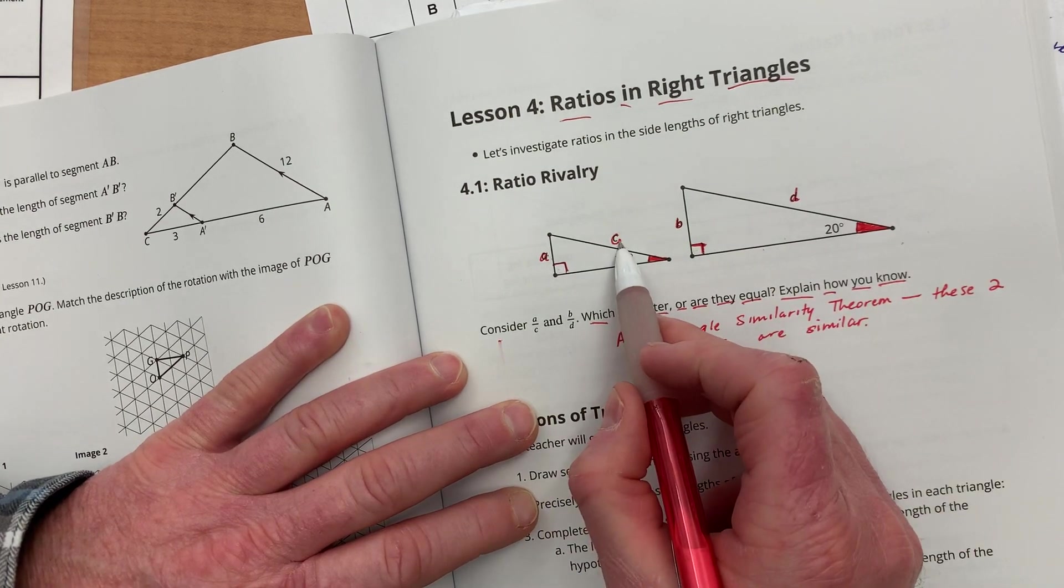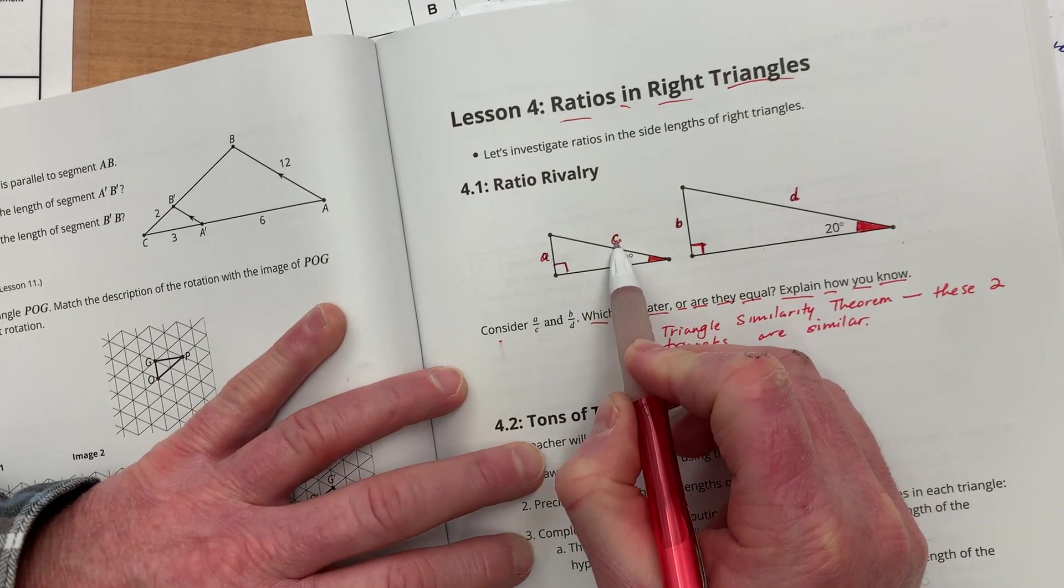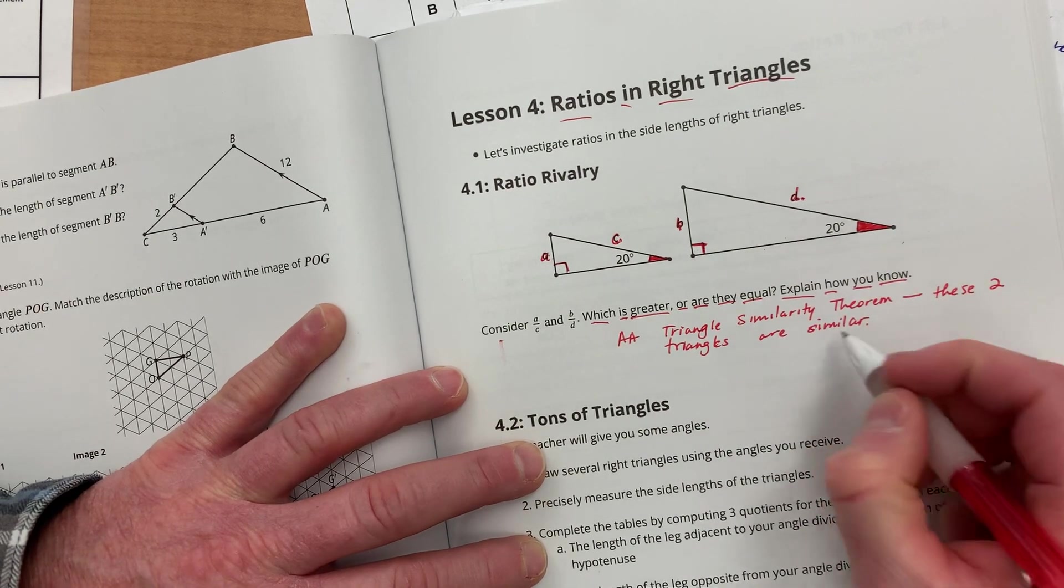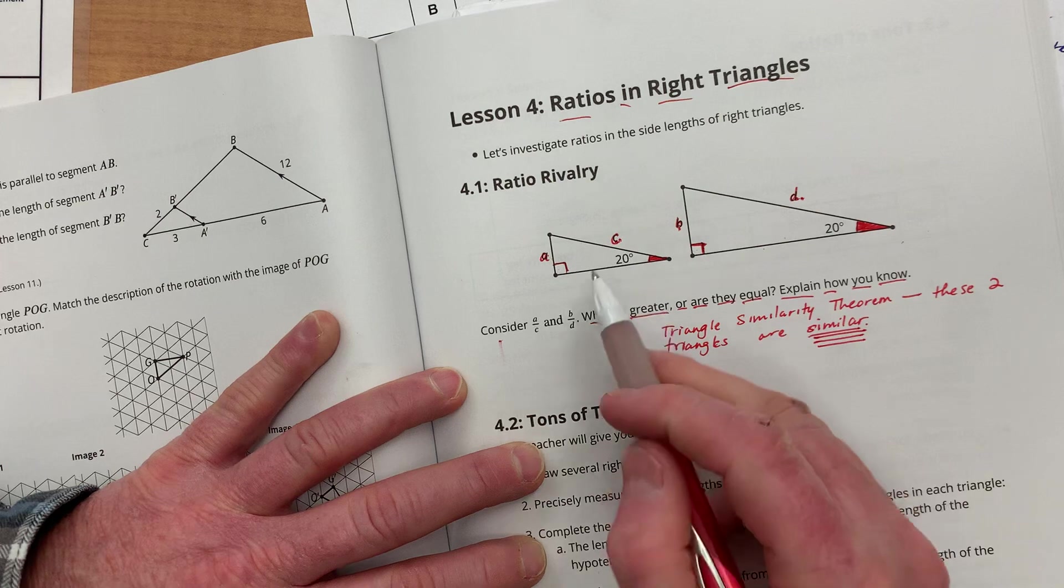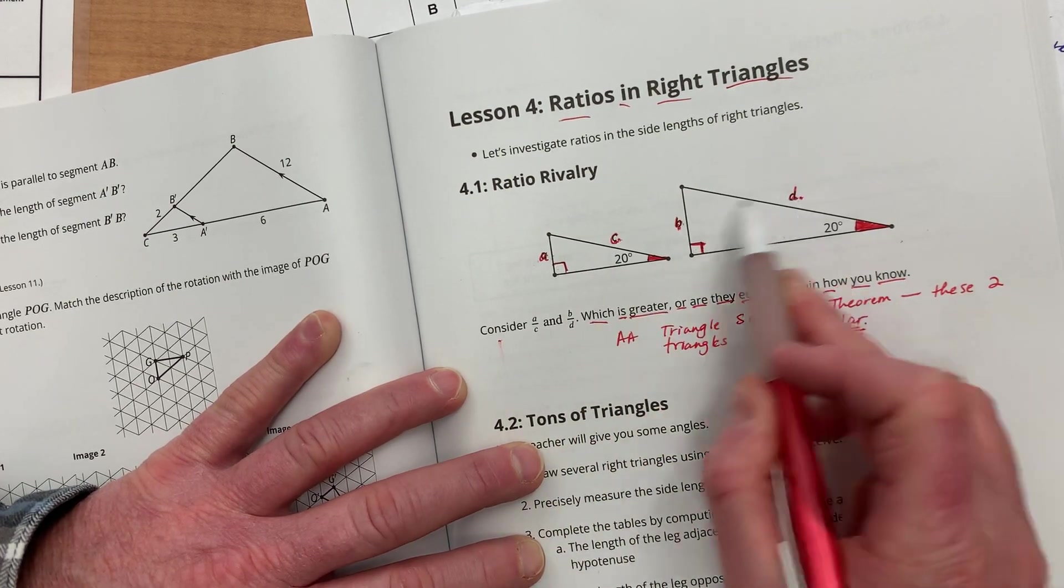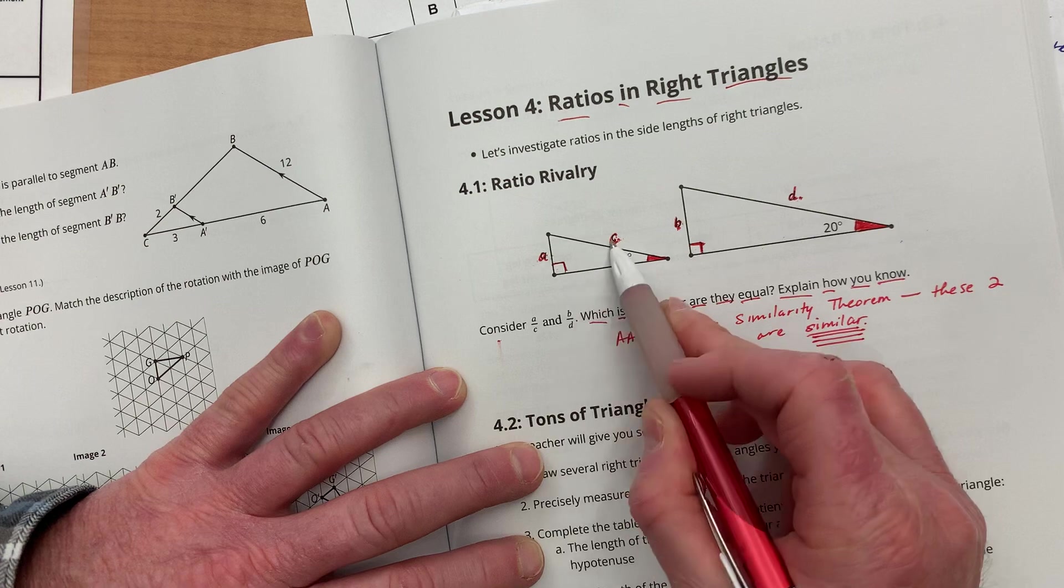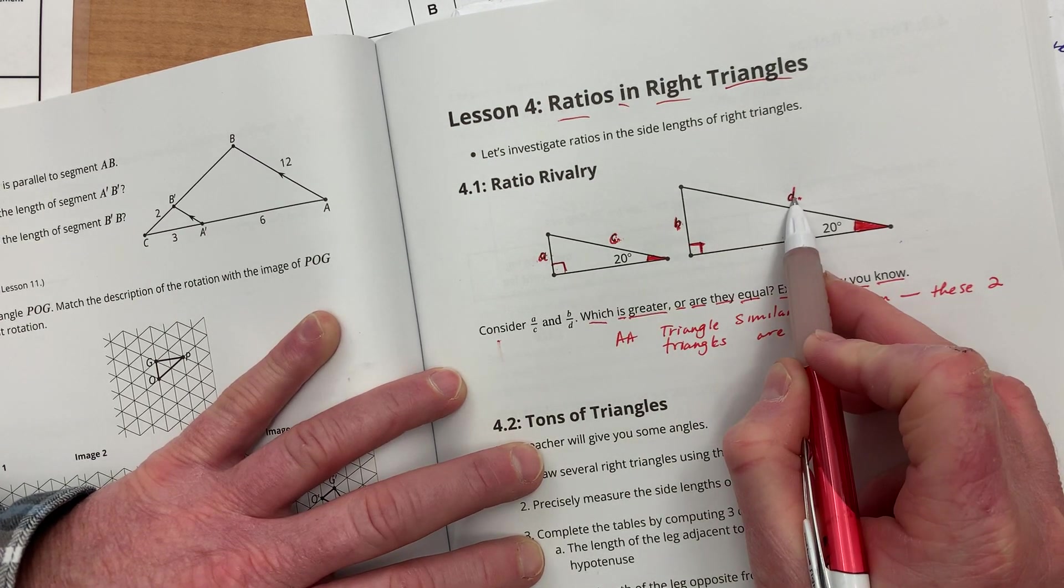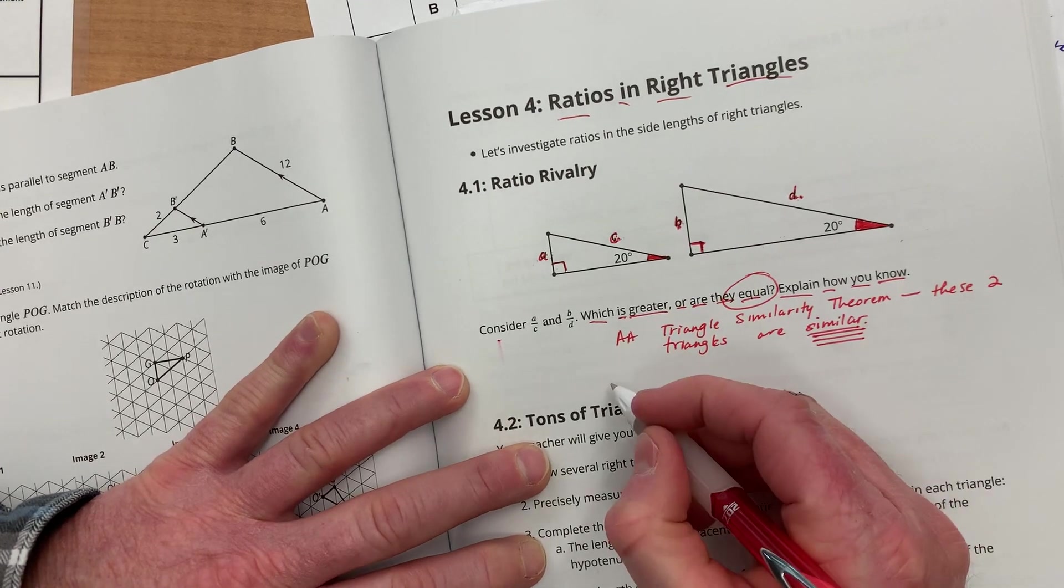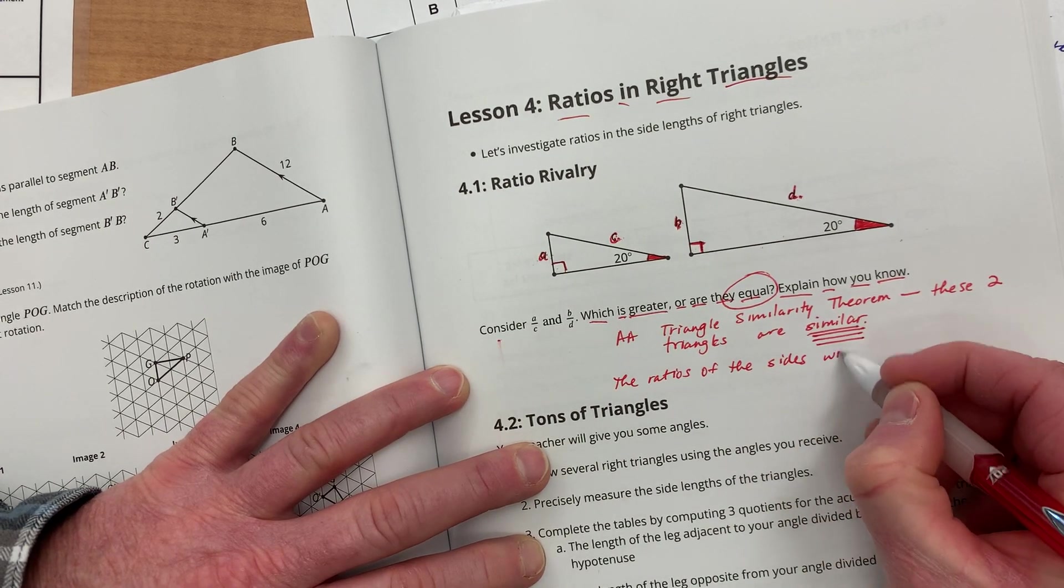So, you could also say that A divided by C will equal B divided by D. Because in similar triangles, the comparison of not only similar sides will be the same, but also if you were to compare sides of two sides of the same triangle to the similar two sides of the other triangle, the ratios will be the same. So, I know these are going to be equal because the ratios of the sides will stay the same.